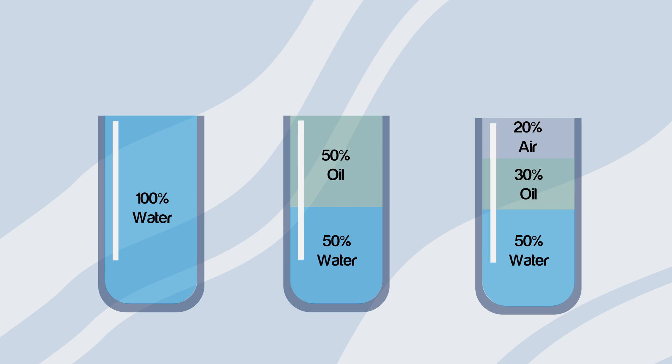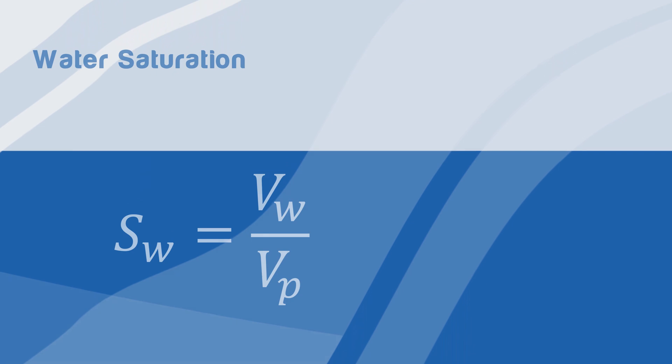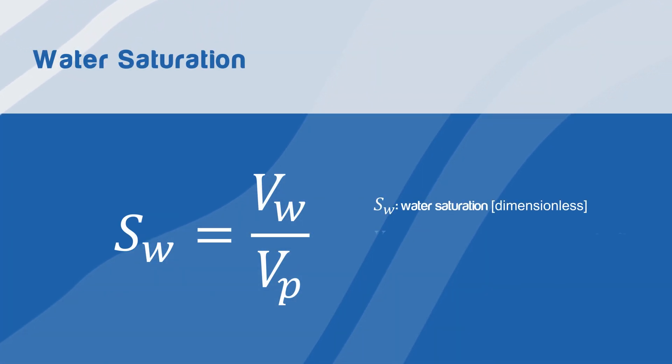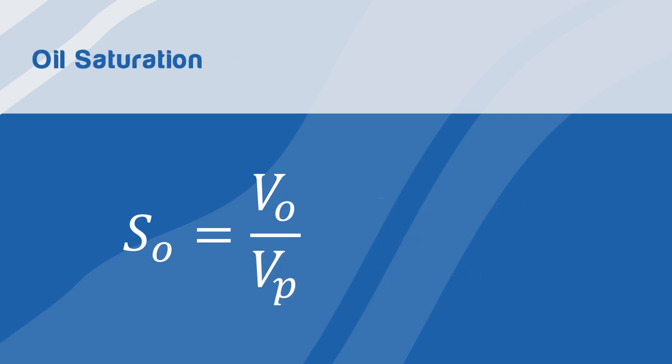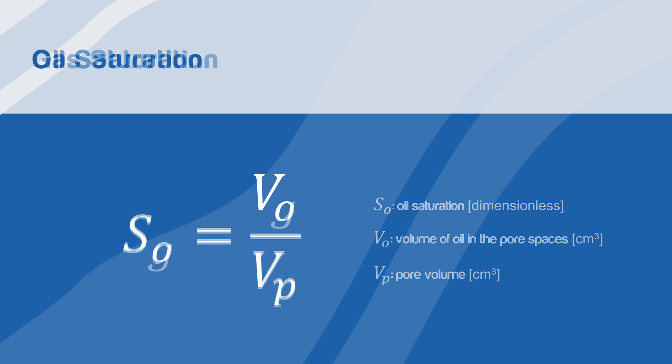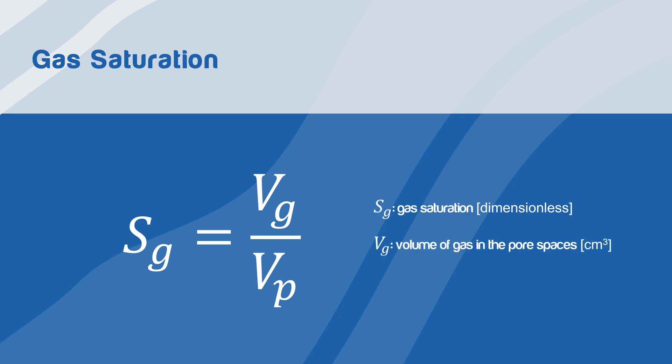We can classify saturation into three categories: water, oil, or gas. Water saturation is the volume of water in a rock divided by the pore volume. Oil saturation is the oil volume divided by the pore volume. Finally, gas saturation is the gas volume in a rock divided by the pore volume.